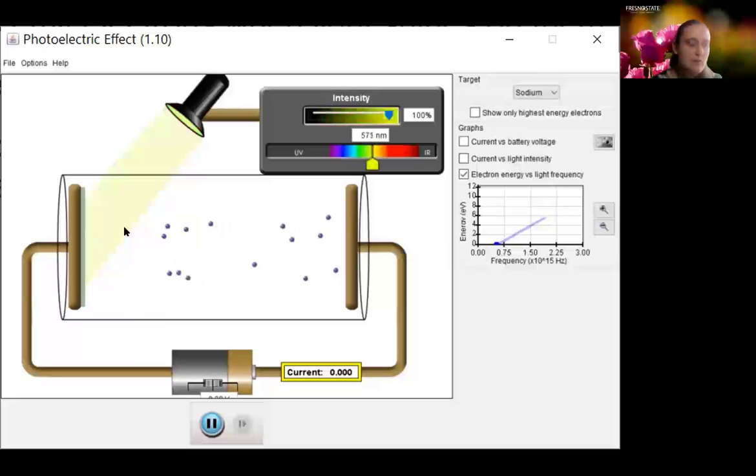And then below the threshold for the metal, which is sometimes called the work function, nothing happens. And it doesn't matter if my intensity is turned up as much as it can be, we're never going to see any electrons coming off.